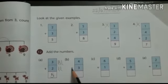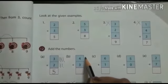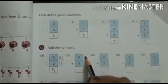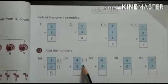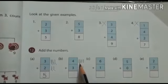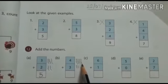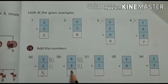4 plus 3. First number is 4, so you draw 4 lines: 1, 2, 3, 4. Next number is 3: 1, 2, 3. Total lines are 1, 2, 3, 4, 5, 6, 7. So the answer is 7.